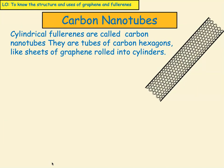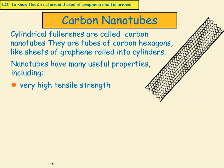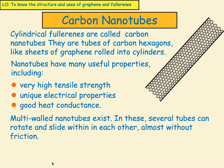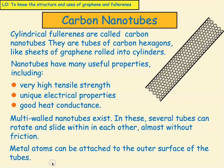Here's another class called carbon nanotubes — these are also fullerenes. The cylindrical fullerenes are called carbon nanotubes, and they are tubes of carbon hexagons, like sheets of graphene rolled into cylinders. They have many useful properties: a very high tensile strength, unique electrical properties, and good heat conductance. There are some multi-walled nanotubes where several tubes can rotate and slide within each other almost without friction. We can also attach metal atoms to the outer surface of the tubes.